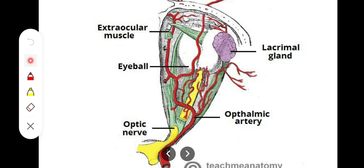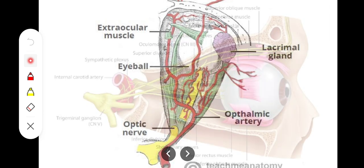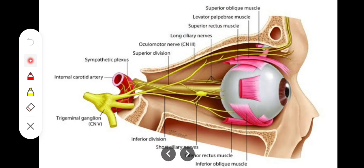Because it is an extension of brain tissue, the optic nerve has meningeal sheaths but does not have a neurilemmal sheath. Now we turn to the ciliary ganglion, which is present between the optic nerve and the lateral rectus muscle.